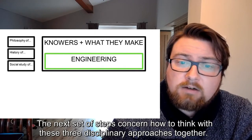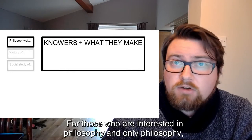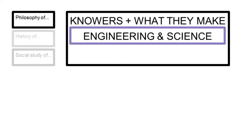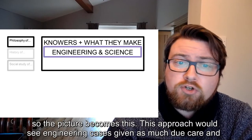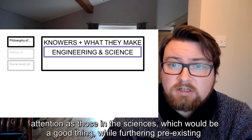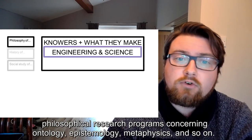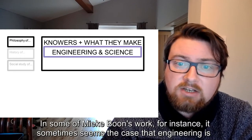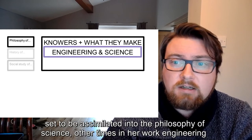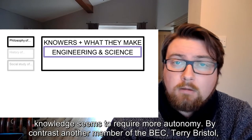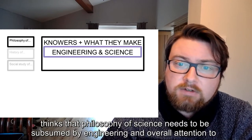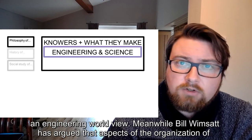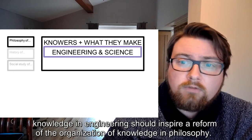The next set of steps concern how to think with these three disciplinary approaches together. For those interested in philosophy and only philosophy, you might be seeking something of an integration of analyses of engineering and science. This approach would see engineering cases given as much due care and attention as those in the sciences, while furthering pre-existing philosophical research programmes concerning ontology, epistemology, metaphysics, and so on. In some of Mika Boone's work, it sometimes seems the case that engineering is set to be assimilated into the philosophy of science; other times, engineering knowledge seems to require more autonomy. By contrast, another member of the BEC, Terry Bristol, thinks that philosophy of science needs to be subsumed by engineering and overall attention to an engineering worldview. Meanwhile, Bill Wimsatt has argued that aspects of the organisation of knowledge in engineering should inspire reform of the organisation of knowledge in philosophy.